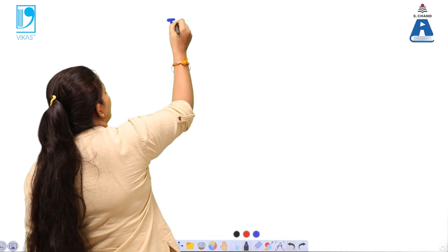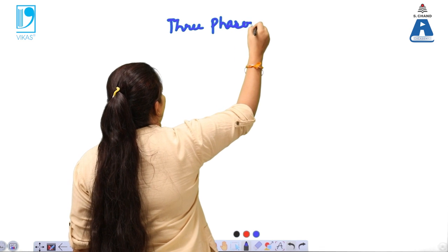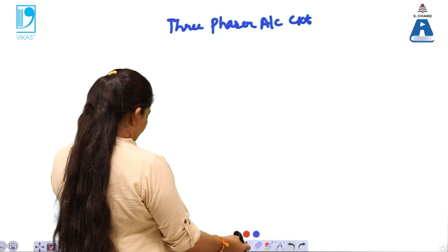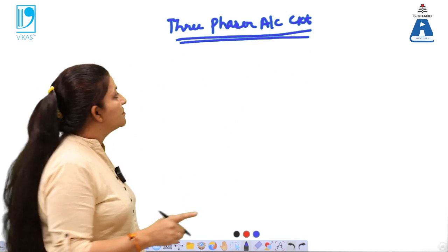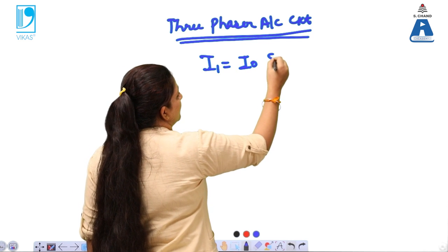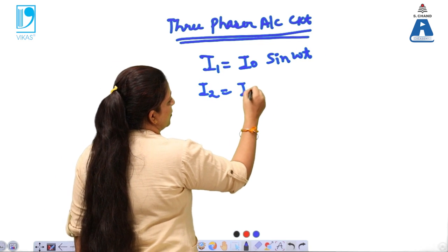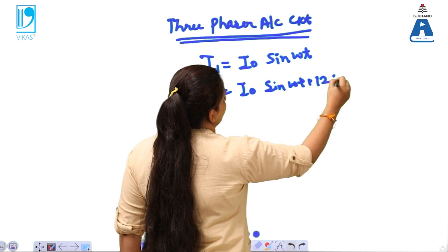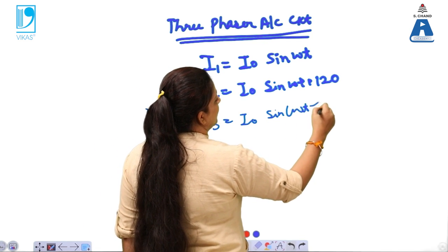In a three-phase AC circuit, three currents are used. The first one is i1 = i0 sin(ωt). The second one is i2 = i0 sin(ωt + 120°). The third one is i3 = i0 sin(ωt − 120°).